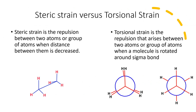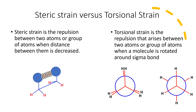You may get confused between steric strain and torsional strain, so here is a quick revision. Steric strain is the repulsion between two atoms or groups of atoms when the distance between them is decreased. Whereas torsional strain is the repulsion that arises between two atoms or groups of atoms when a molecule is rotated around a sigma bond.